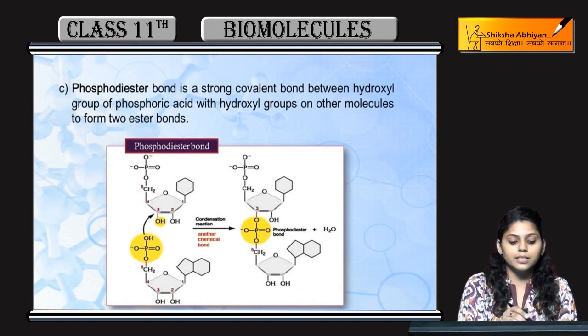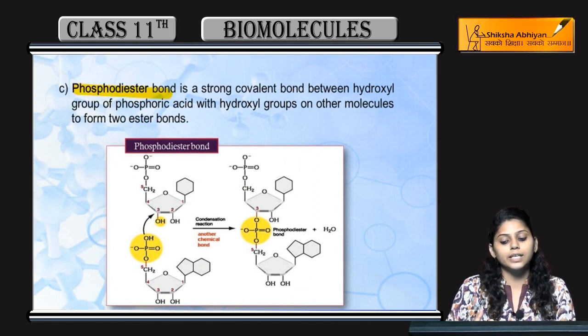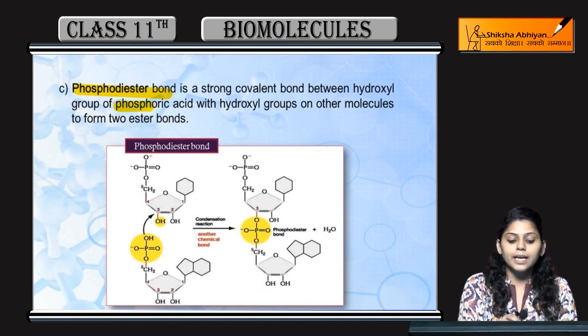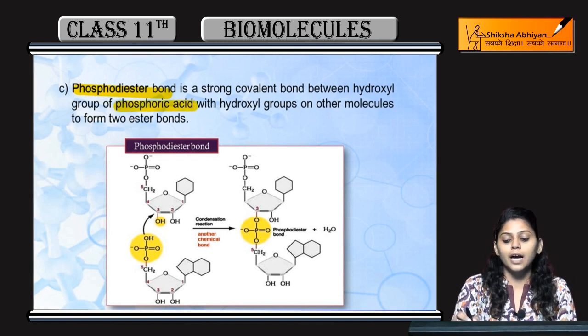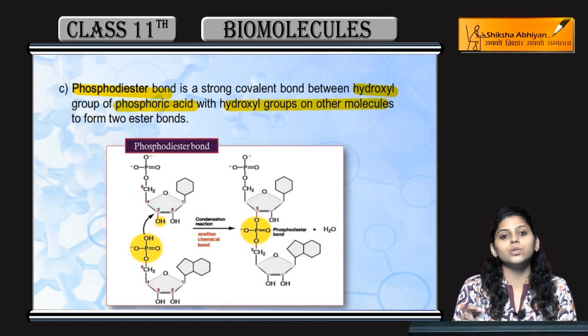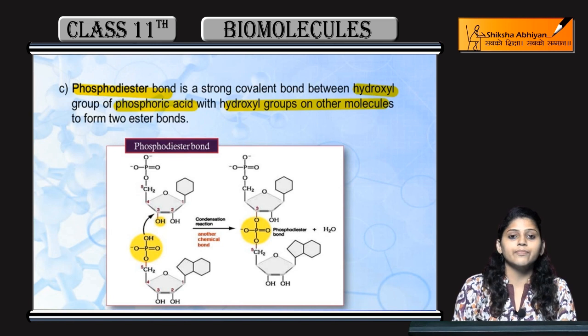Next is phosphodiester bond। Phosphodiester bond कैसे बनता है? ये बनता है phosphoric acid के hydroxyl group और किसी और molecule के hydroxyl group की linkage से, bond formation से।